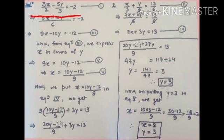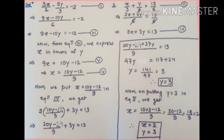The first equation is 3x/2 minus 5y/3 equal to minus 2. We simplify this equation and get equation 3: 9x minus 10y equal to minus 12. Similarly, x/3 plus y/2 equal to 13/6 is equation 2, and simplifying it gives equation 4: 2x plus 3y equal to 13.